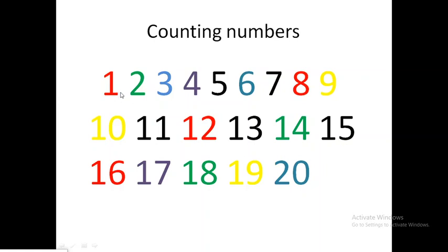One, two, three, four, five, six, seven, eight, nine, ten, eleven, twelve, thirteen, fourteen, fifteen, sixteen, seventeen, eighteen, nineteen, twenty. Again: one, two, three, four, five, six, seven, eight, nine, ten, eleven, twelve, thirteen, fourteen, fifteen, sixteen, seventeen, eighteen, nineteen, twenty.